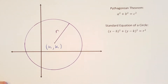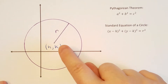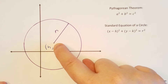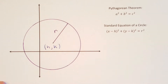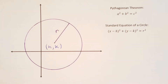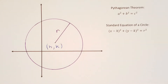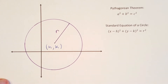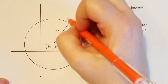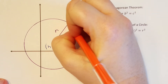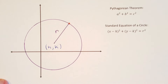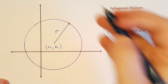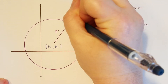So r is the distance from h,k to this point on the circle itself. And there's nothing special about this point — it can be any point on the circle.